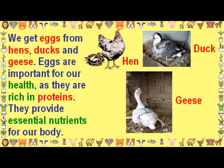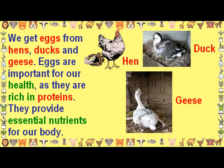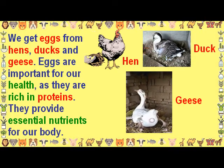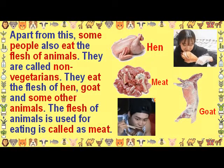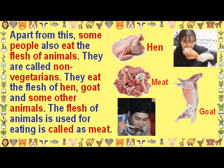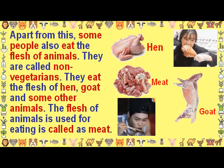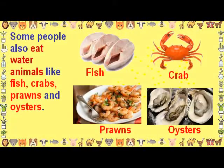We get eggs from hens, ducks, and geese. Eggs are important for our health as they are rich in proteins and provide essential nutrients for our body. Some people also eat the flesh of animals; they are called non-vegetarians. They eat the flesh of hen, goat, and some other animals. The flesh of animals used for eating is called meat. Some people also eat water animals like fish, crabs, prawns, and oysters.